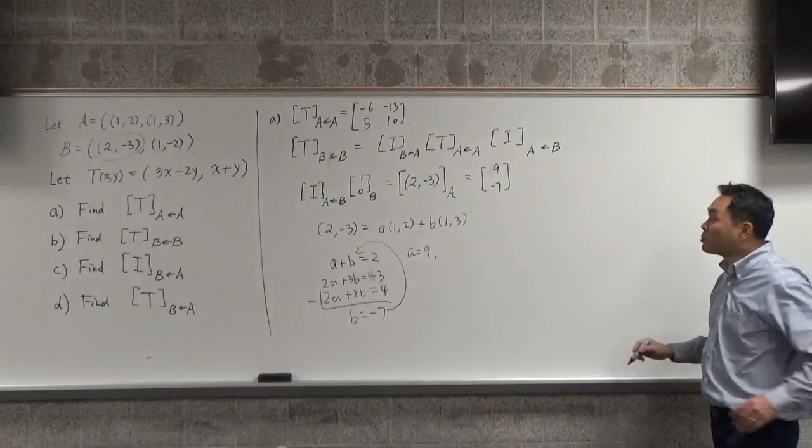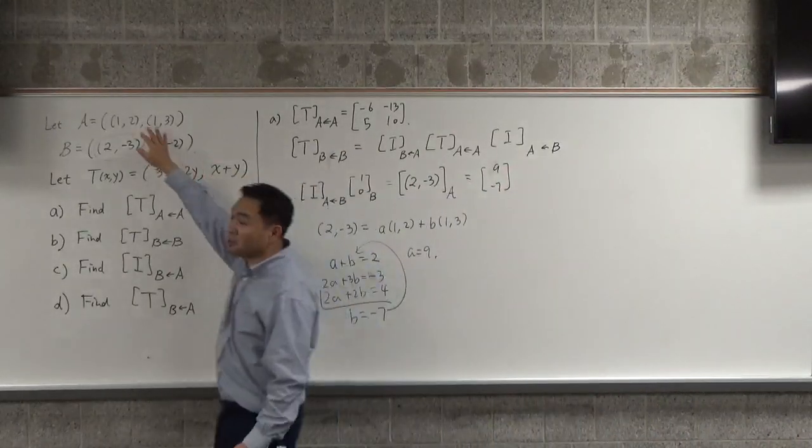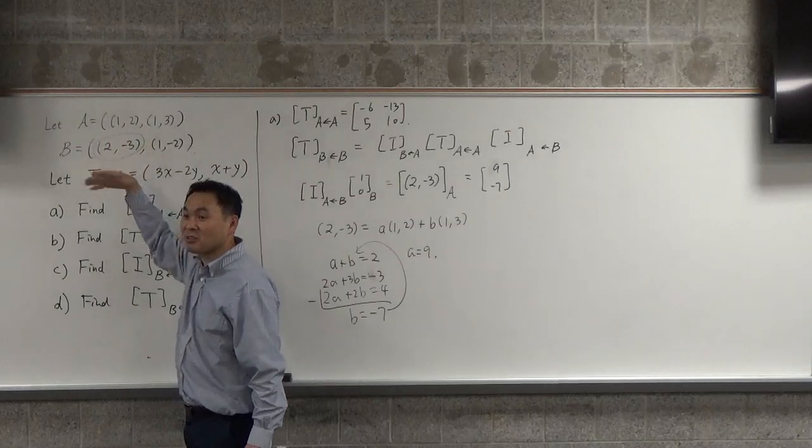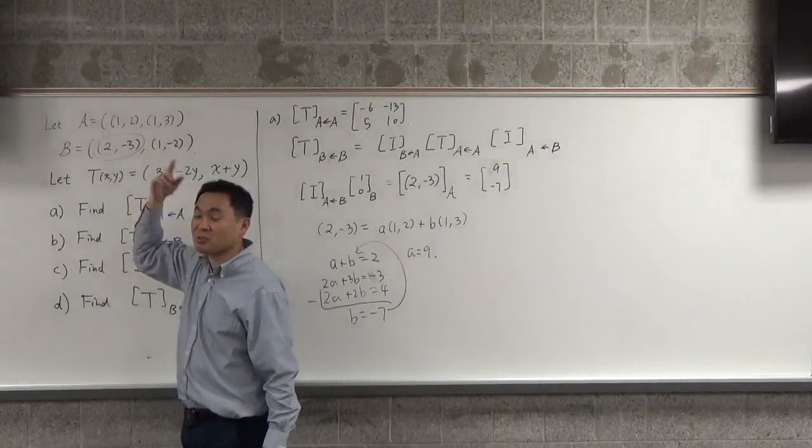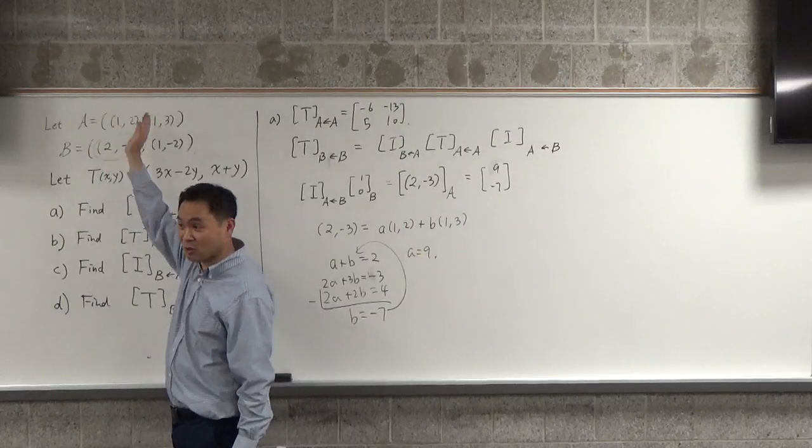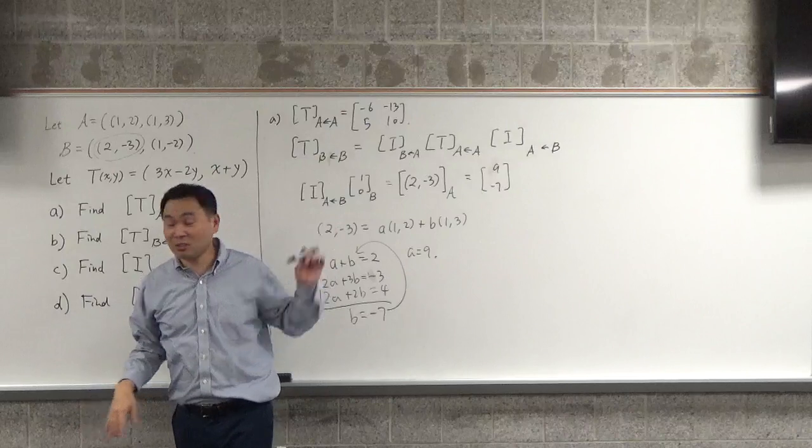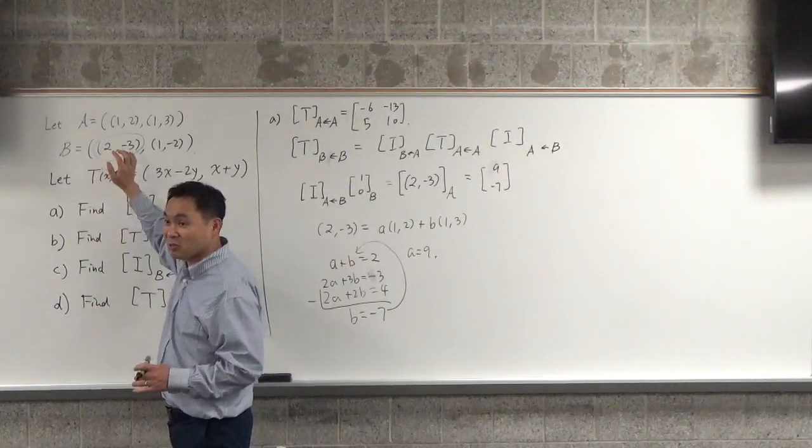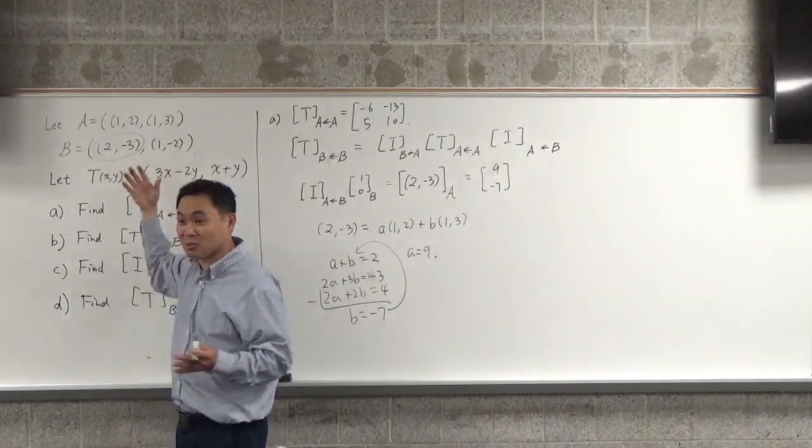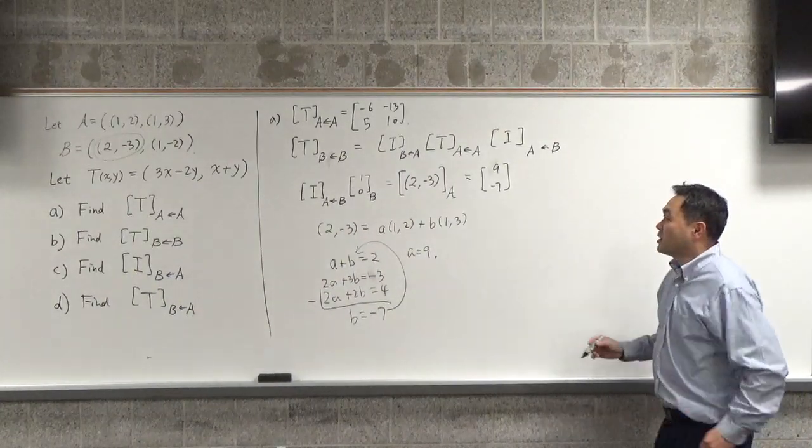And my point is, this 9 and negative 7 has nothing to do with any of these vectors. And that's, the reason is, in our previous example, one of them was a standard basis: (1,0), (0,1). In that case, you would expect some of these to be either the matrix formed by the basis or the inverse of that matrix. But here, it's none of those.